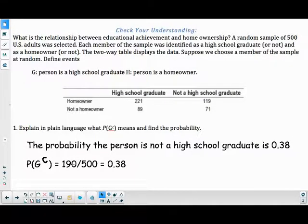So where does that 190 come from? Well, that's going to be the total of 119 and 71. You add those up, you get 190. So that's the probability if you pick somebody at random from the 500, they would not be a high school graduate. It's going to be the complement of being a high school graduate.